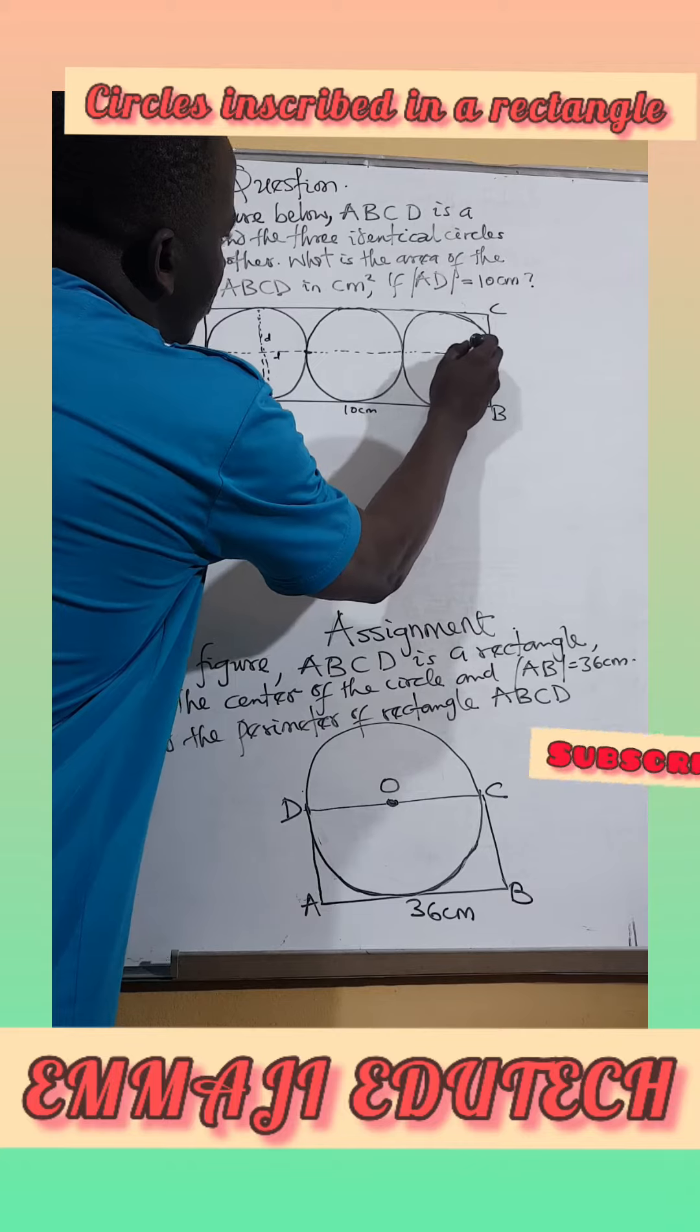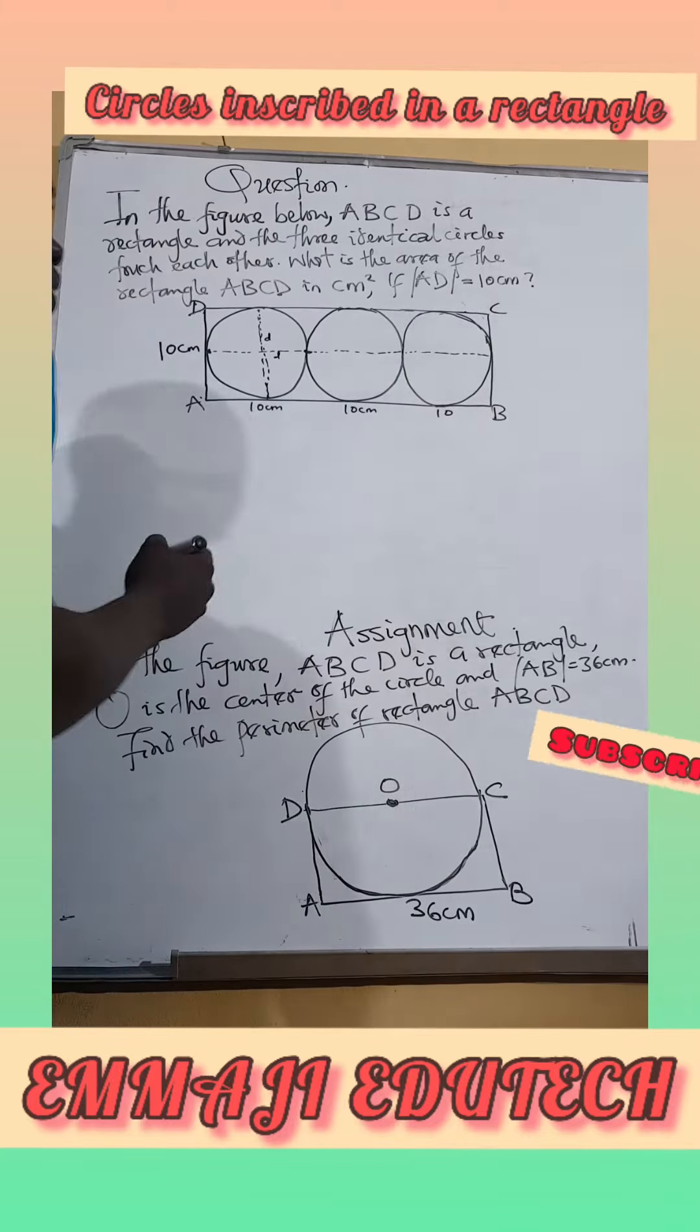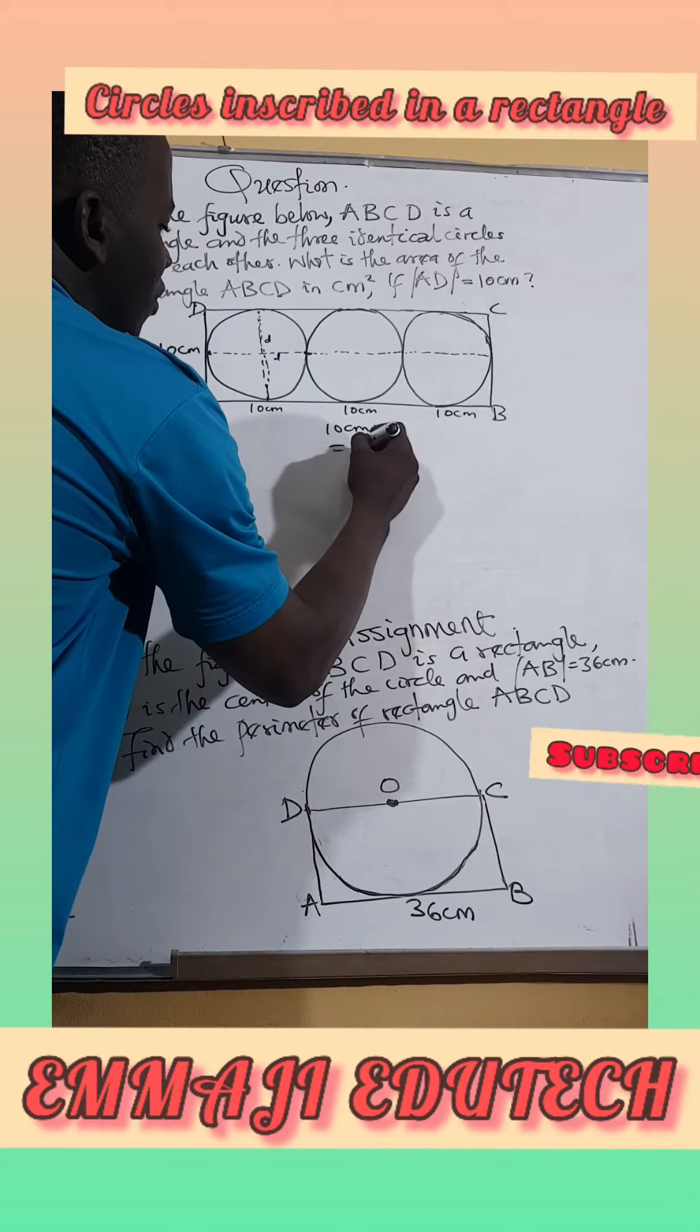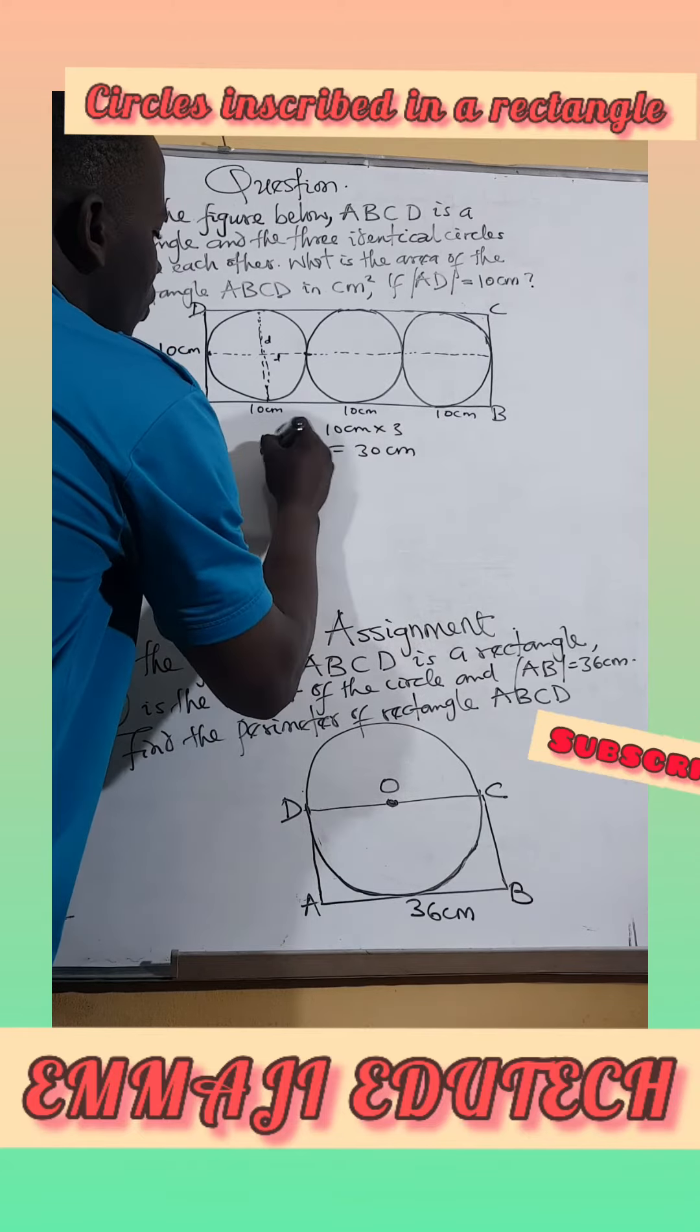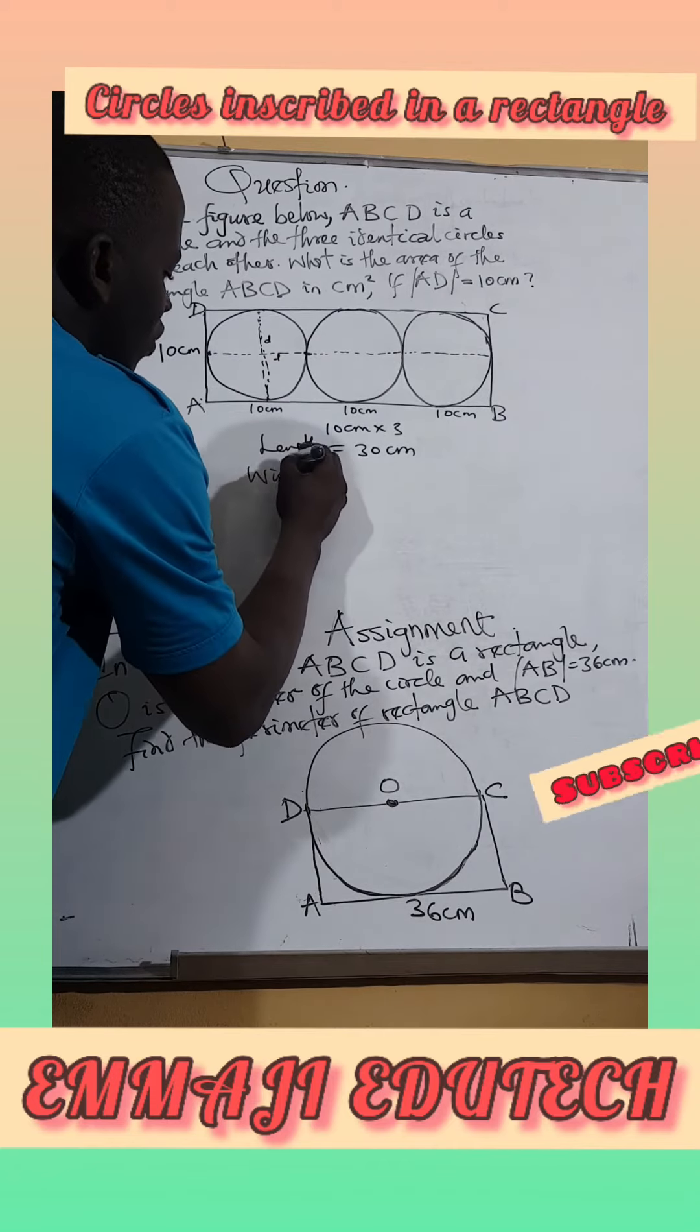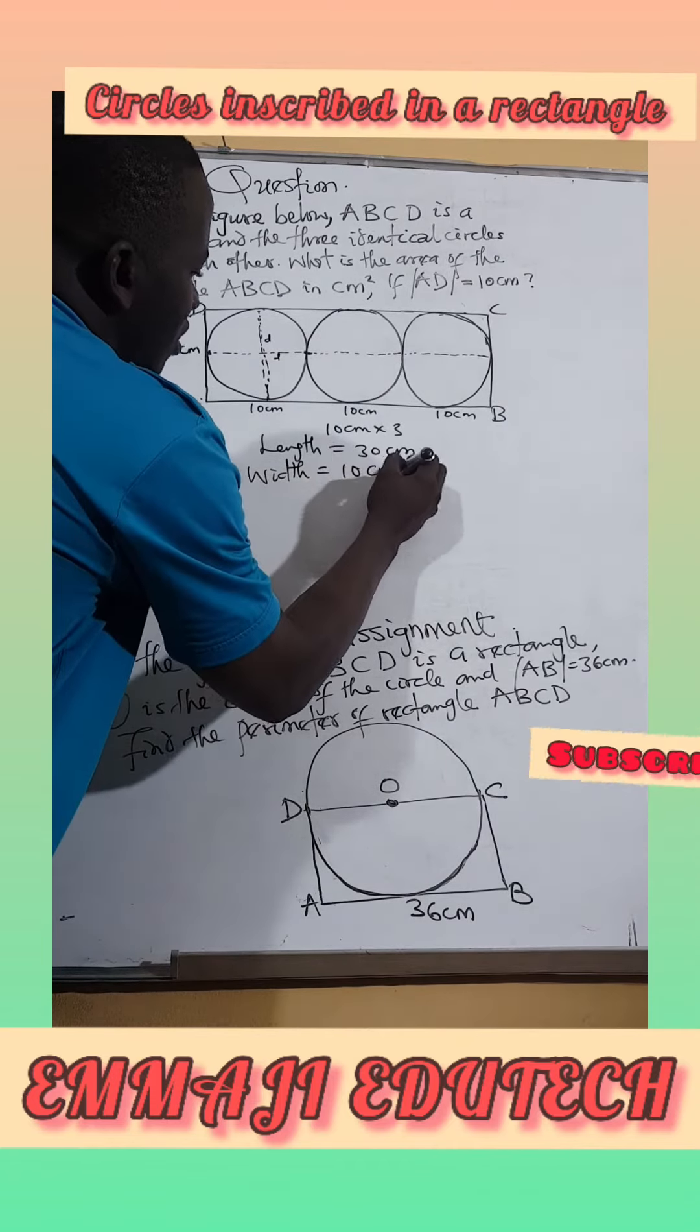From here to here should be 10cm which means that 10cm times 3 should give us 30cm which is the length of the rectangle. Already we know the width which is 10cm.